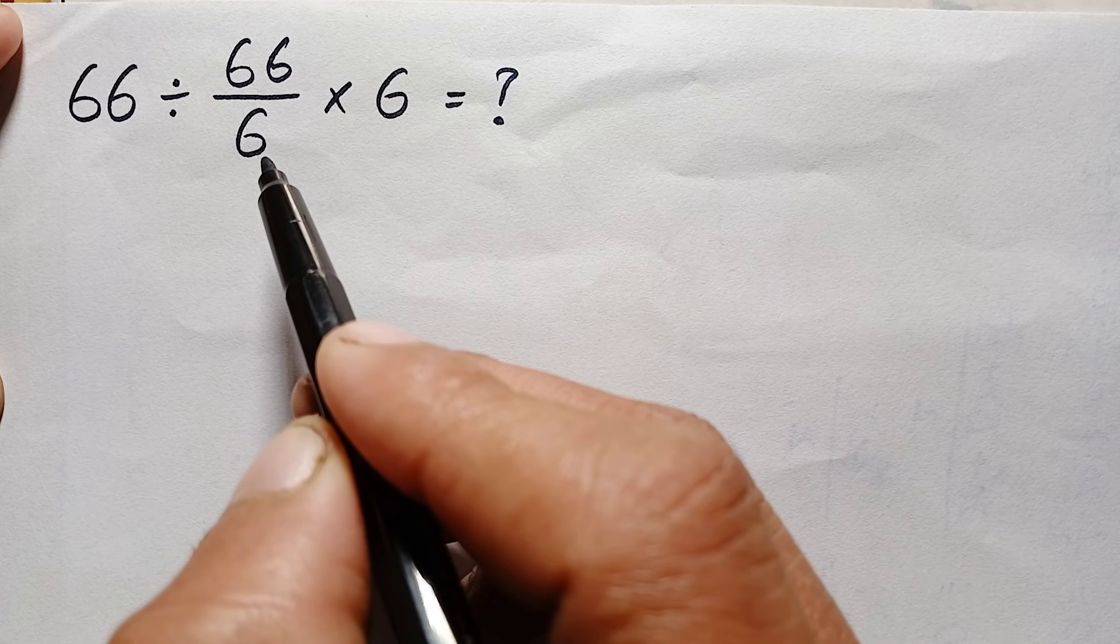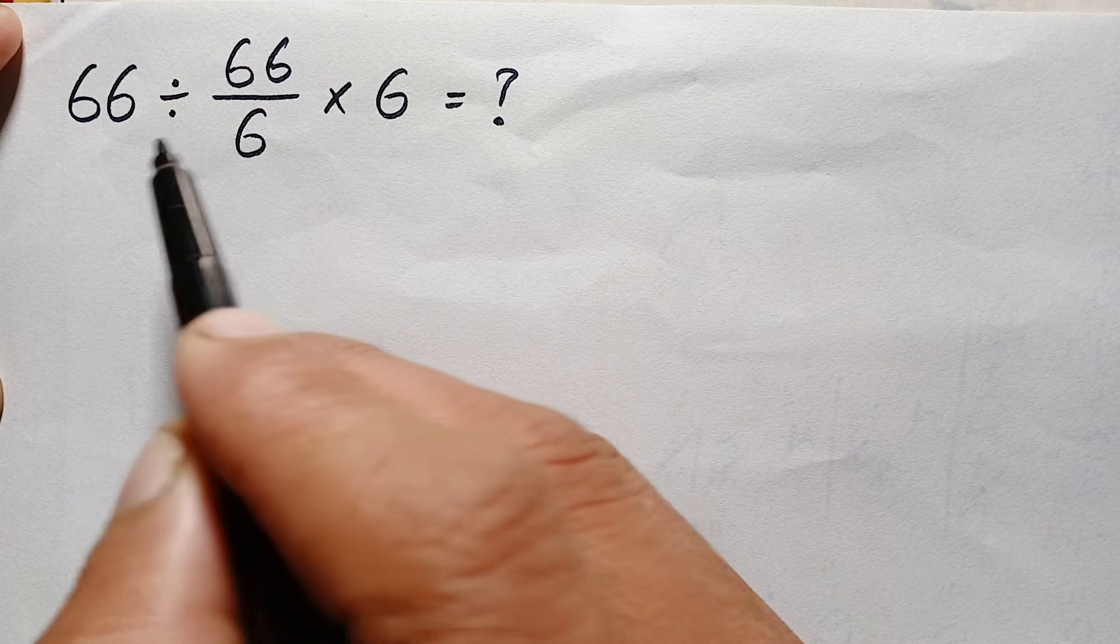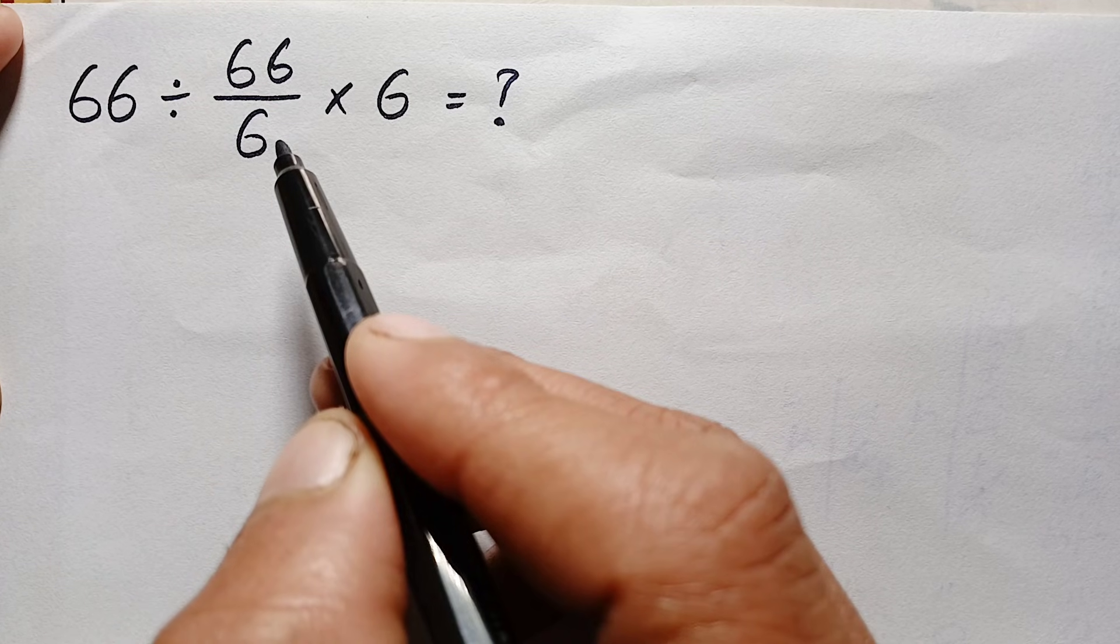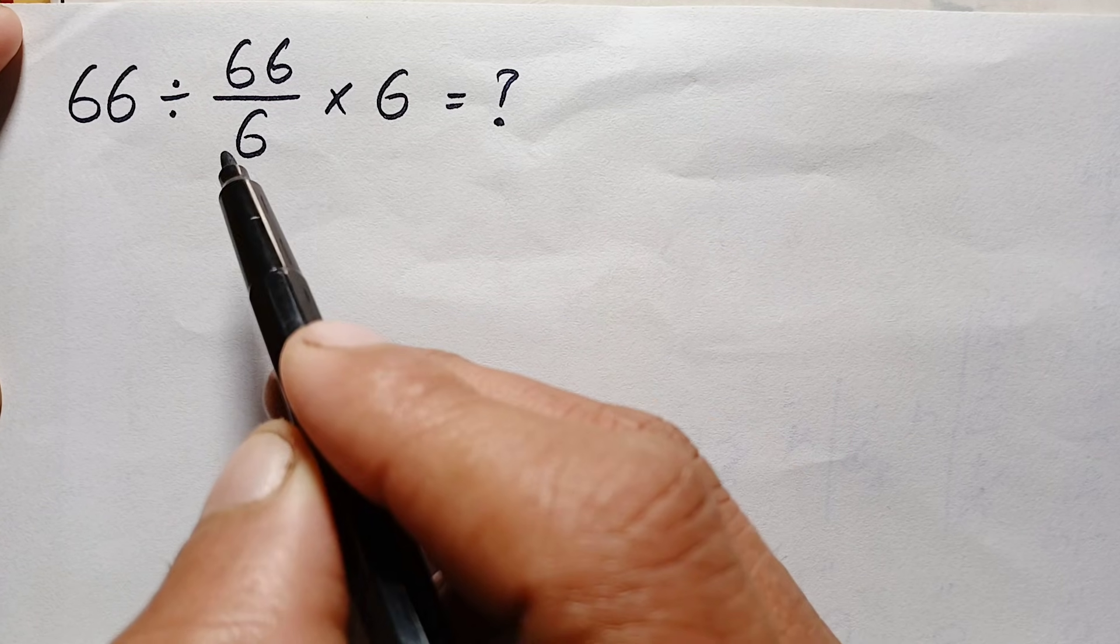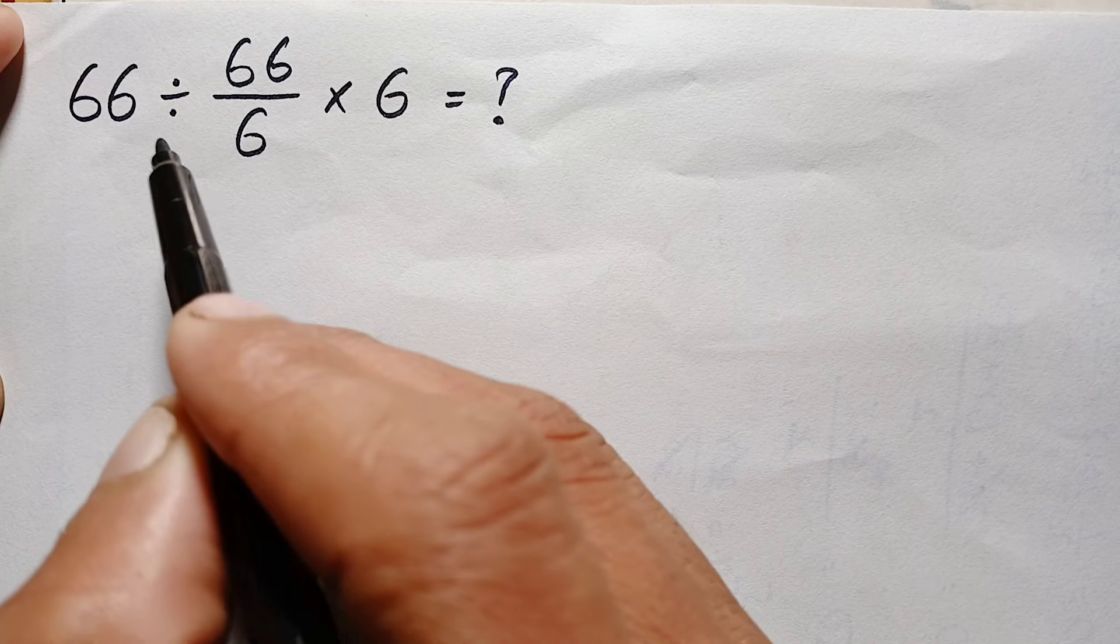According to PEMDAS rule, first we have to simplify brackets or parentheses, then exponents, but there are no brackets or exponents. Next is multiplication or division, so here we have to simplify multiplication and division from left to right.